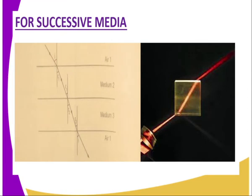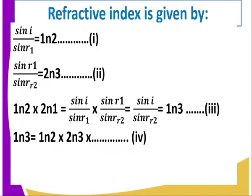So what about successive media? That is, light moving from one medium to another, and at each interface there is bending which occurs. How do we determine the refractive index? Sine i over sine r is equal to the refractive index of medium 1 with respect to medium 2. At the second interface, the angle of refraction becomes the angle of incidence, and the new angle of refraction in medium 3 gives us the refractive index of medium 1 with respect to medium 3. By computing this, we have a systematic way of getting the refractive index throughout the media.